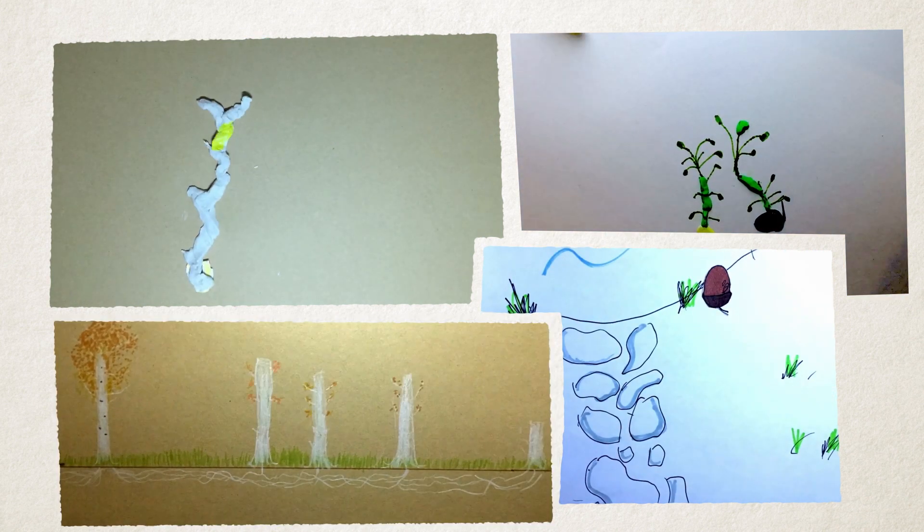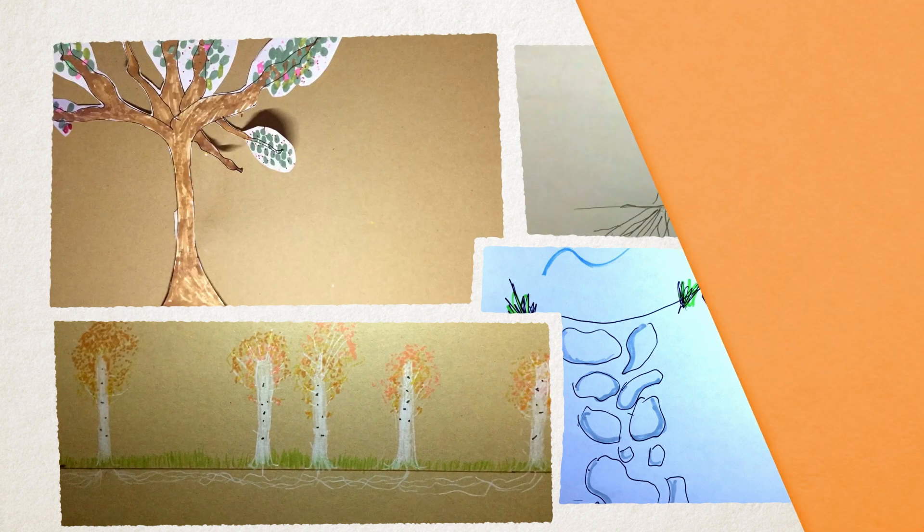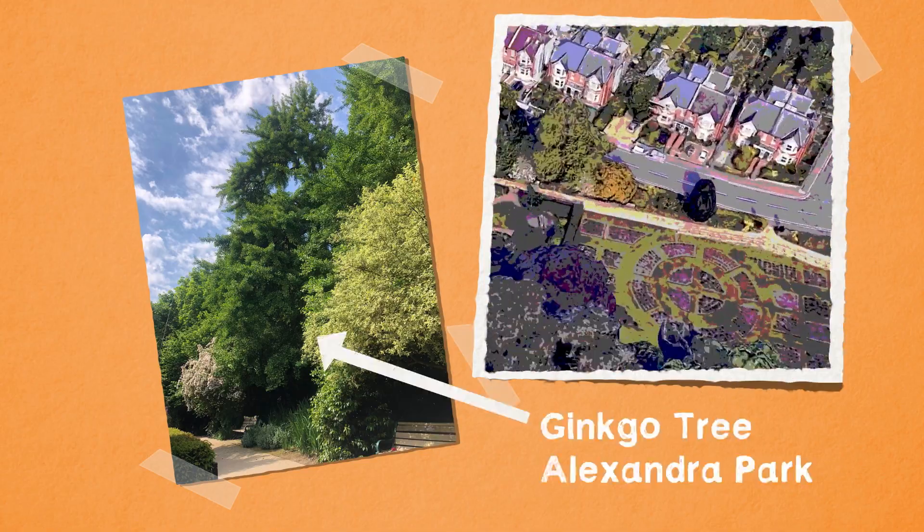One of the oldest types of trees is a deciduous tree called the ginkgo. You can find one in Alexander Park in Hastings.